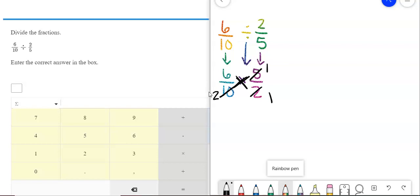Now, look at the six and this two. Two goes into two once. Two goes into six three times. So, I'm going to end up with three over two, which equals one and one-half.